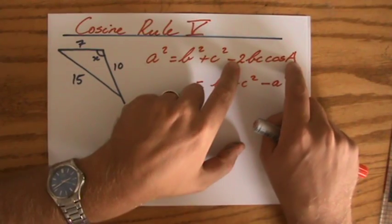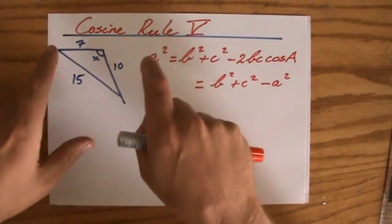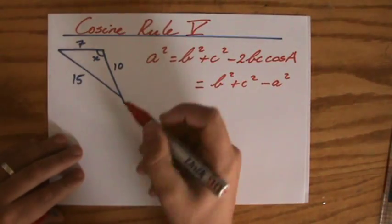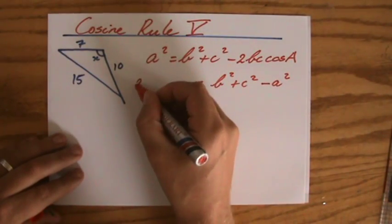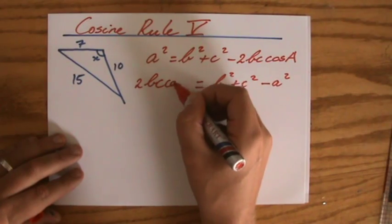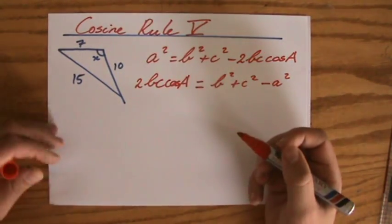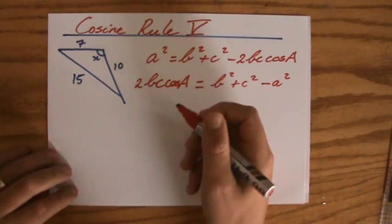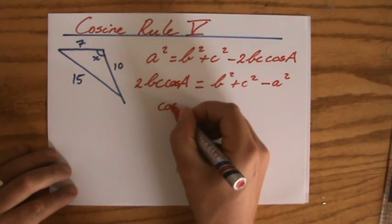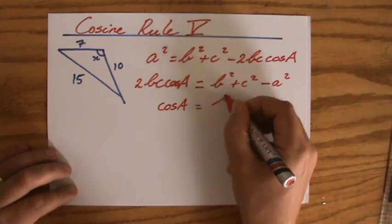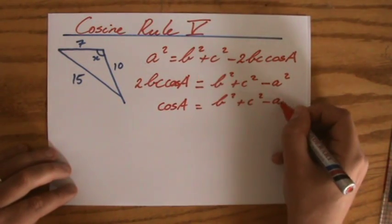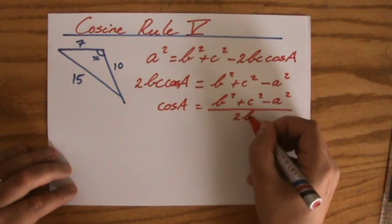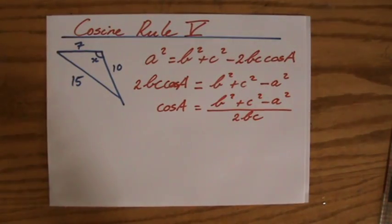I'm going to do the same thing with this term. I'm going to move it to the left side. And what happens to the sign if I do so? It changes. So on the left side of the equal sign, this becomes 2 times B times C times the cosine of A. But I don't want to know what 2 times B times C times the cosine of A equals to. I want to know what the cosine of A equals to. So the last thing I have to do, and then I've rearranged the formula, is I divide both sides by 2 times B times C. I've rearranged the formula.